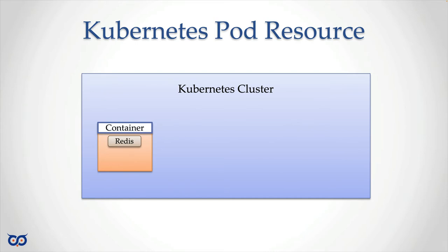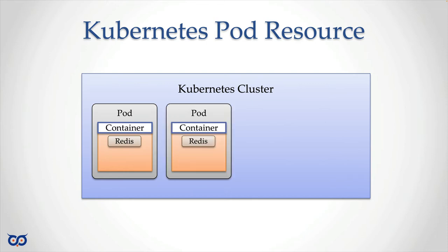We've been running containers in Docker, and now we want to step it up with Kubernetes to see what benefits it gives us that Docker doesn't. We can still run a container in Kubernetes, but here's the thing: Kubernetes manages containers using something called a pod. This is the first thing you'll encounter in Kubernetes, because that's the basic unit needed to create a container. Just like in Docker you can create multiple containers, in Kubernetes you create multiple pods.